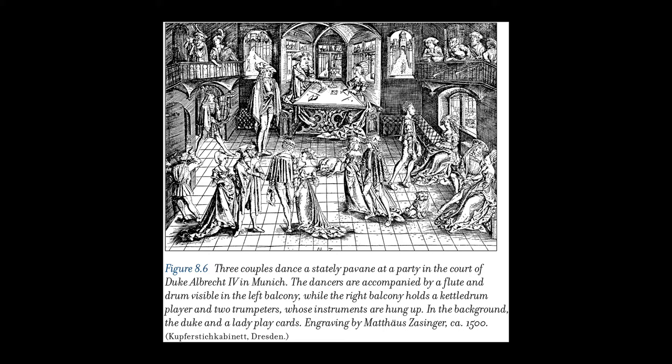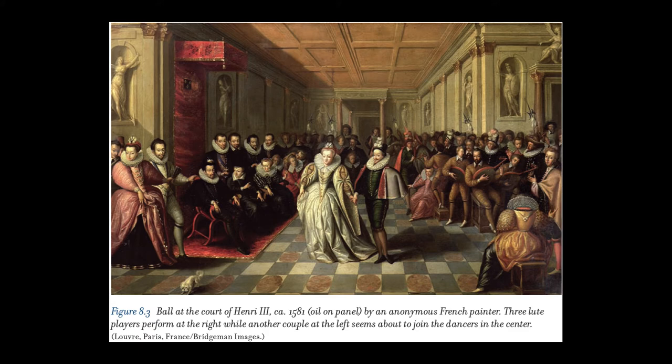16th century composers of dance music began developing instrumental music that was distinctive from vocal music. Printed dance pieces show us that 16th century performers often improvised by ornamenting a given melodic line or by adding one or more contrapuntal parts to a given melody. Published dances for ensemble were functional, but most dances for solo lute or keyboard were stylized. Each dance type has a characteristic rhythm, meter, tempo, and form. The favorite courtly dance of the 15th and early 16th centuries was the bass dance, and Renaissance dances were often grouped in contrasting pairs, such as the Pavane and Galliard.